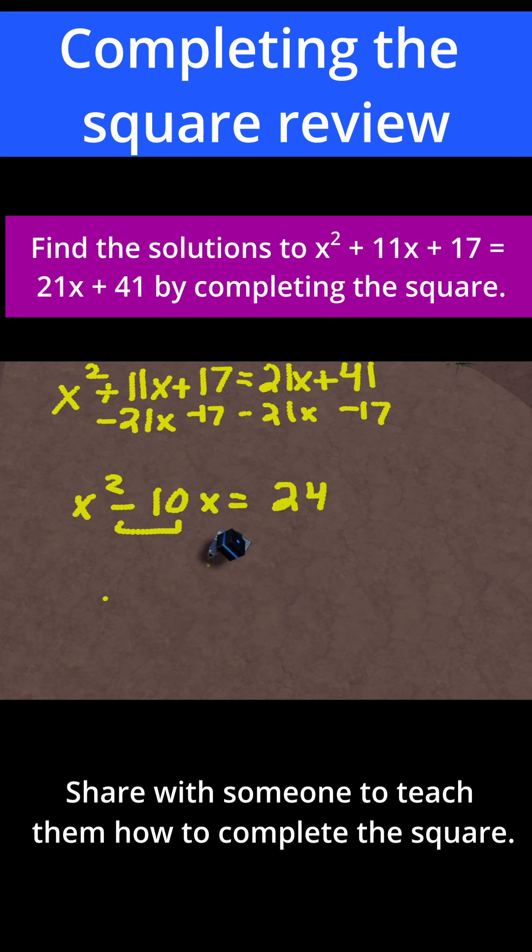So if we add 25 to both sides, I'll have x squared minus 10x plus 25 is equal to 24 plus 25. 24 plus 25 is just 49.